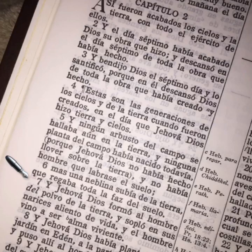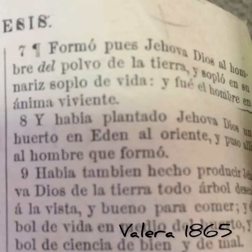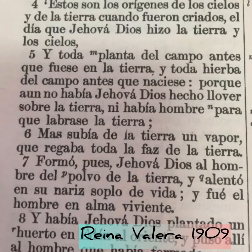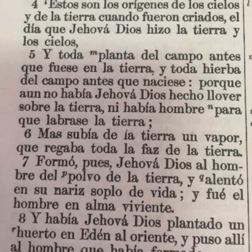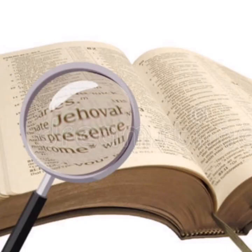En Génesis 2:7 leemos: «Y Jehová Dios formó al hombre del polvo de la tierra y sopló en sus narices aliento de vida, y el hombre vino a ser alma viviente.» Una lectura parecida la encontramos en Valera 1865 y 1909. En su traducción, al igual que en Reina Valera, Pratt dio importancia extrema al nombre de Dios en la forma Jehová, aún conociendo que otros eruditos preferían la pronunciación Yahvé.